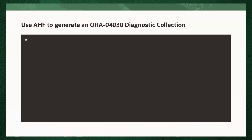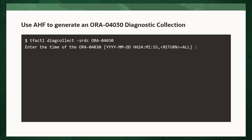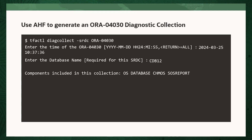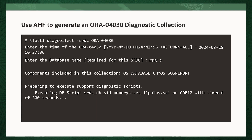Simply log into the machine where the ORA-4030 error occurred, and as the Oracle user run the command. You'll be prompted to enter the date and time of the ORA-4030 you're interested in, and then the database name. If in doubt, just hit return. AHF will then collect all the relevant information in a zip file for each machine.